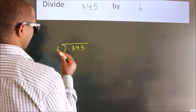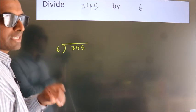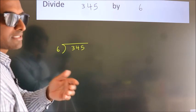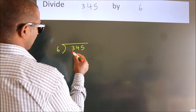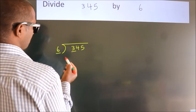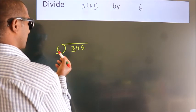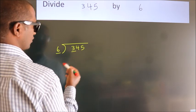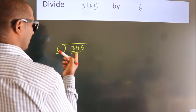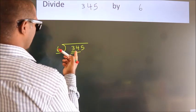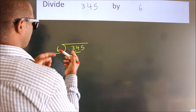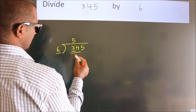6 here. This is your step one. Next, we have 3 here. 3 is smaller than 6, so we should take two numbers: 34. A number close to 34 in the 6 table is 6 fives, 30.